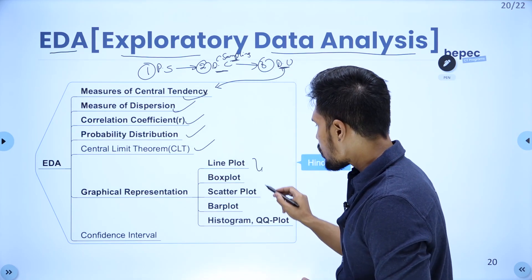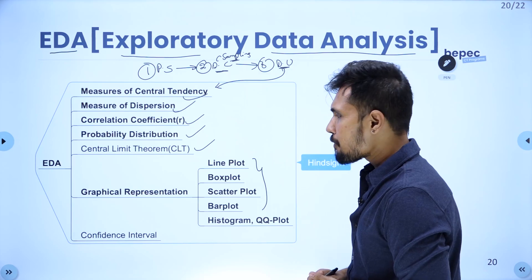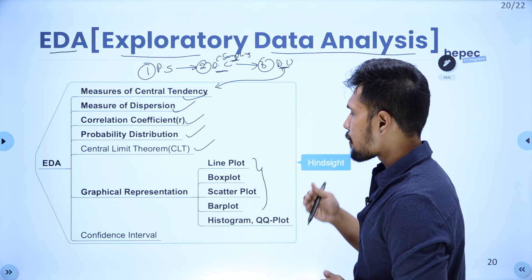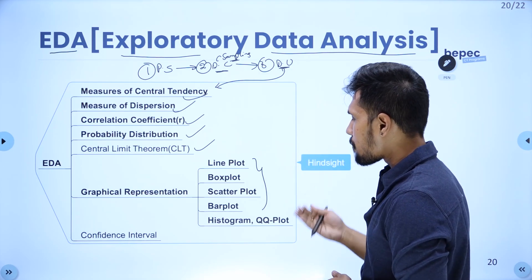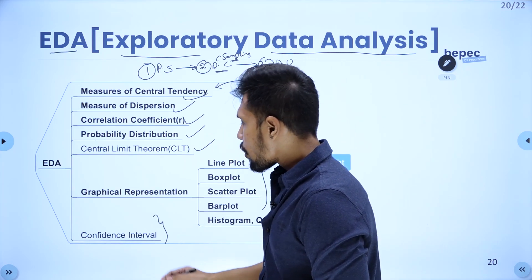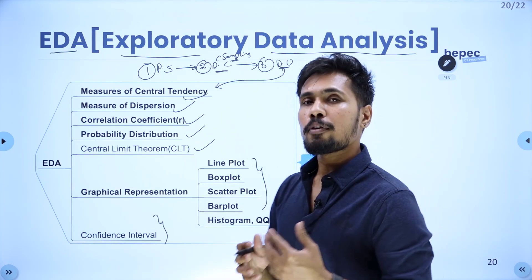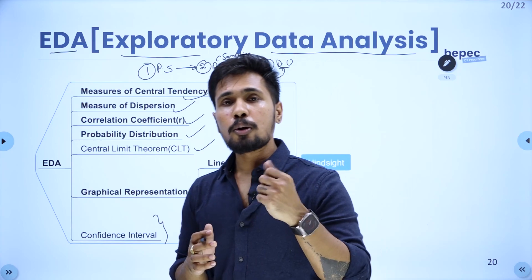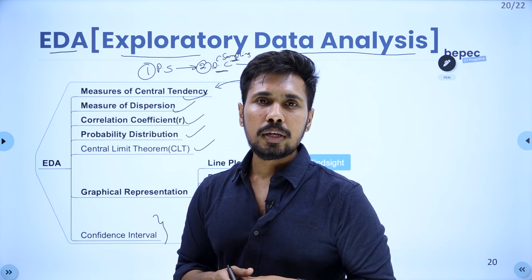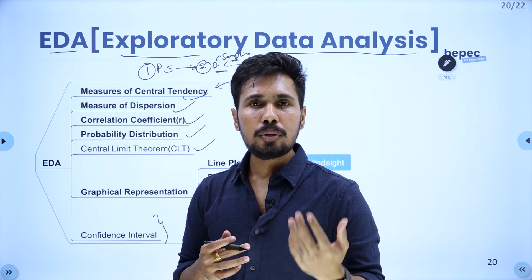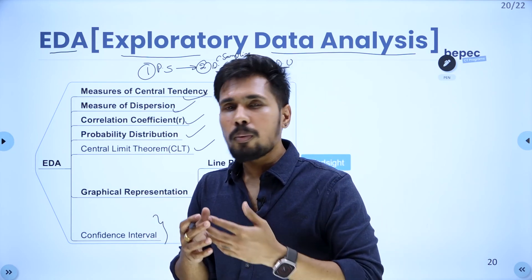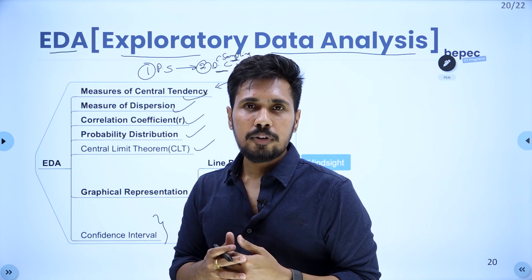In EDA you are also able to perform graphical representations like line plot, box plot, scatter plot, bar plot, and histogram. You can perform confidence intervals, probability distributions, hypothesis testing, z-scores, and within hypothesis testing you have chi-square, ANOVA, and all those kinds of tests.